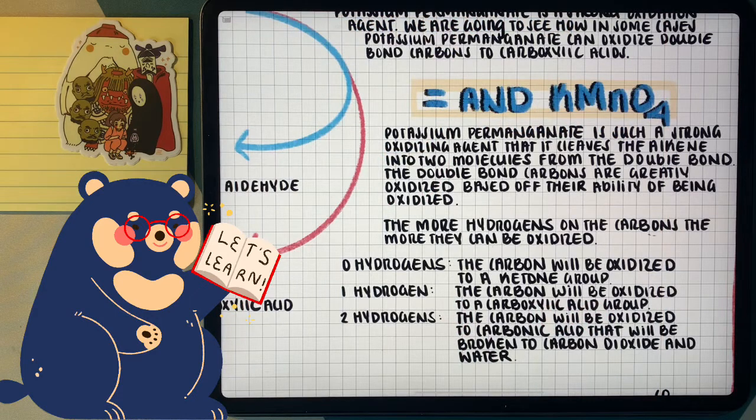So the rule of thumb for this reaction is that if the double bond carbon has zero hydrogens, once it gets oxidized, we'll be forming a ketone. If it has one hydrogen after the oxidation process, we'll be forming a carboxylic acid.